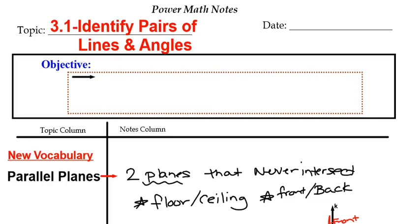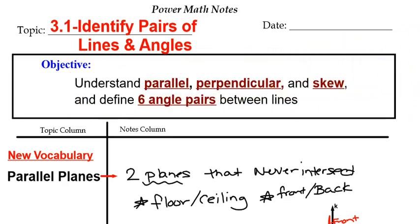We're going to go over the practice problems from section 3.1, identifying pairs of lines and angles. The objective for this lesson is to understand parallel, perpendicular, and skew, and to define six angle pairs between the lines. I have some diagrams here and we're going to talk about how to figure out which lines we're dealing with and how to draw according to directions. Make sure you have that goal copied.